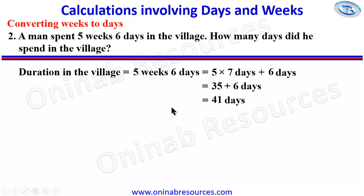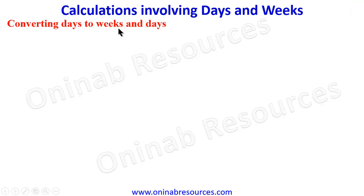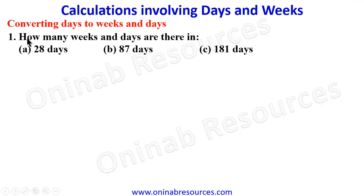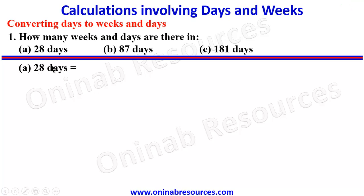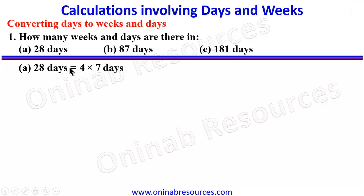That's all for problem 2 under converting weeks to days. Now we look at converting days to weeks and days. Starting from problem 1: how many weeks and days are there in A. 28 days, B. 87 days, and C. 181 days? Starting from A: since there are 7 days in a week, we look at how many 7s we can get from 28 days. 28 is 4 times 7 days, so we have 4 weeks in 28 days. We can also say 28 divided by 7 is 4, giving us 4 weeks.